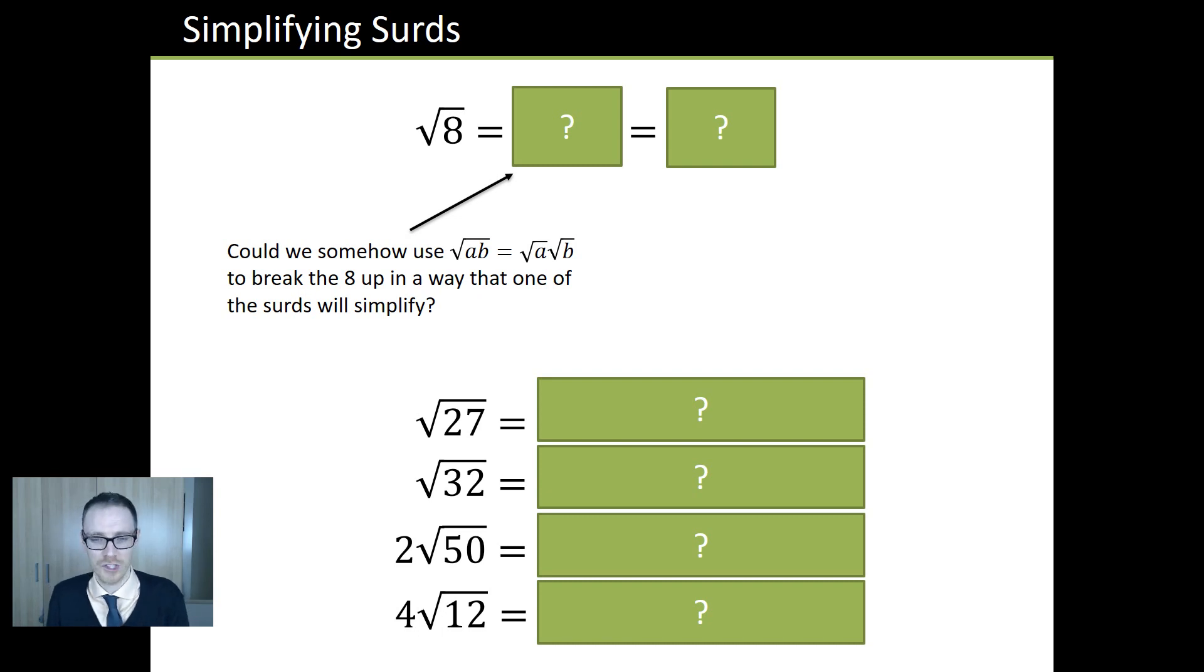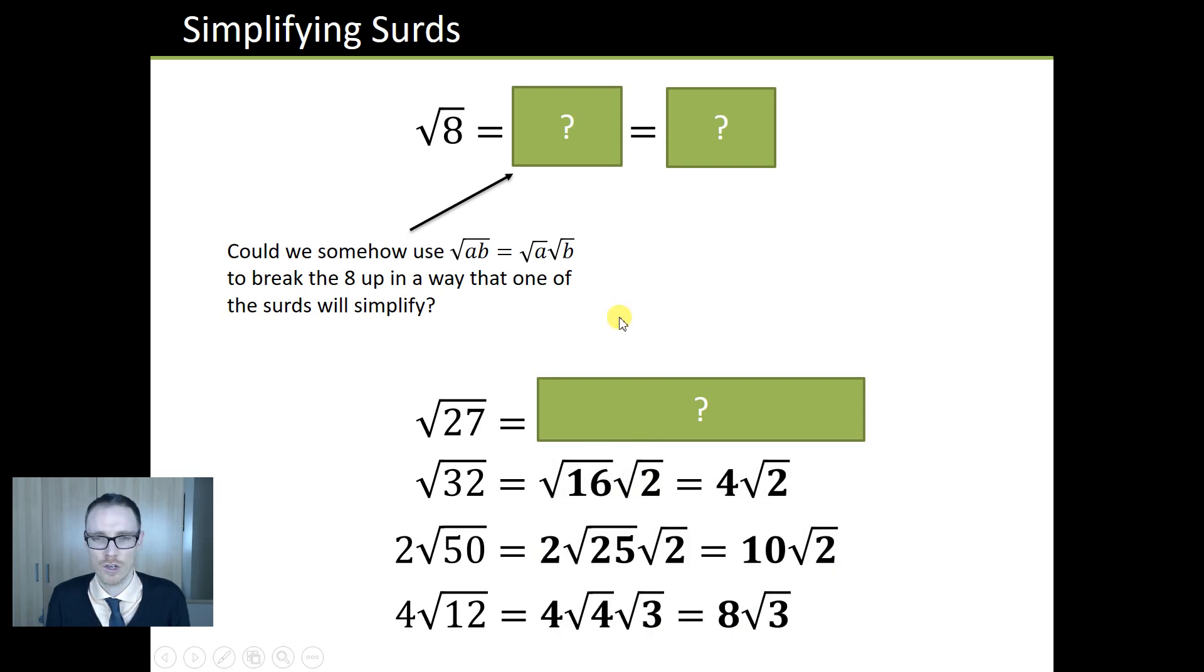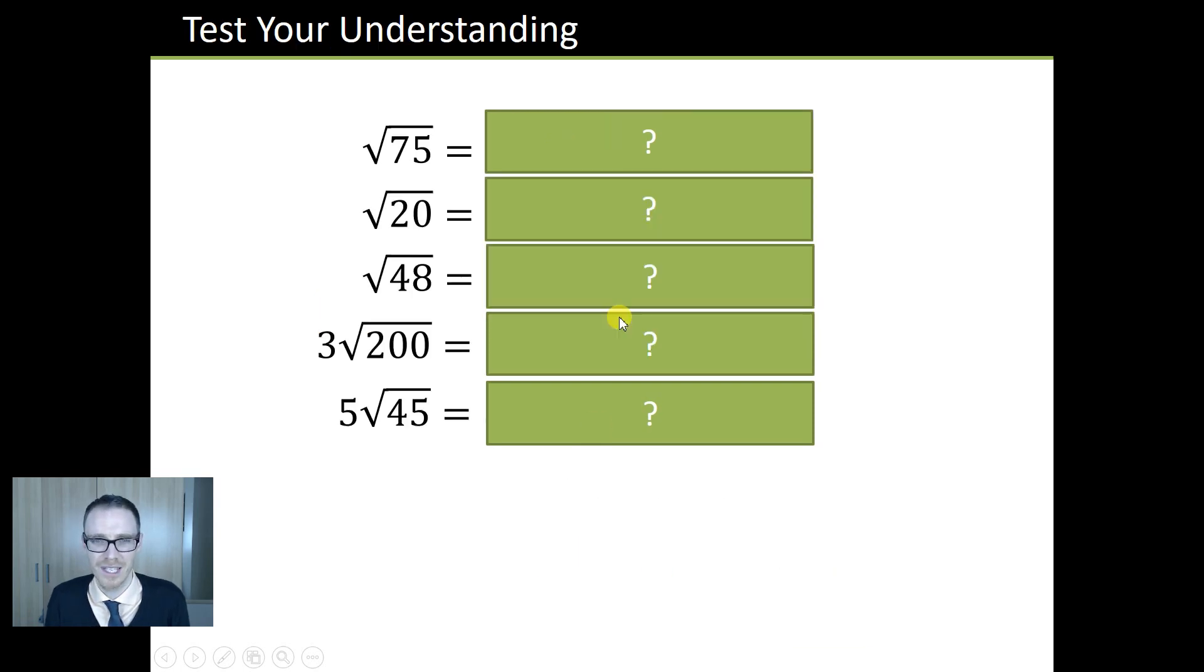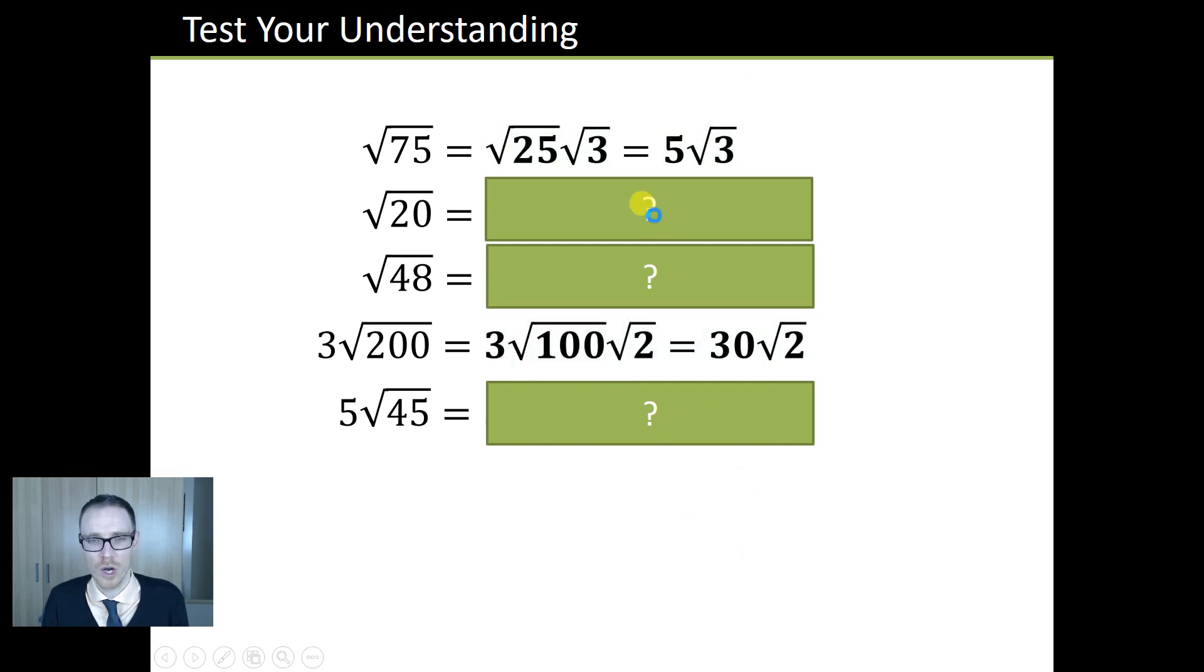So then we have a nice, simple worked example, simplifying surds. And again, it's just nice. You can just reveal the answers, give you so much control and flexibility. A little test your understanding. And again, you can reveal them in any order and so on. And notice a nice little progression of difficulty there. We've got the little number on the outside and so on.